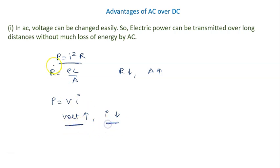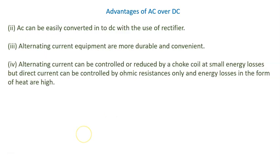AC can be easily converted into DC with the use of a rectifier. We all use mobile chargers and laptop chargers, and these chargers work on DC. At home we are using AC, so with the help of a small device, that is the rectifier, AC can be converted into DC.